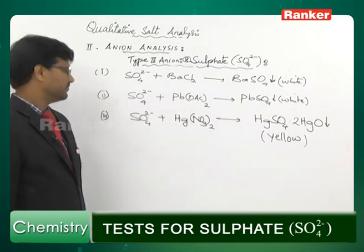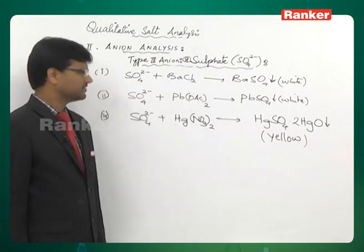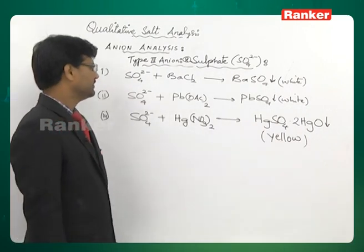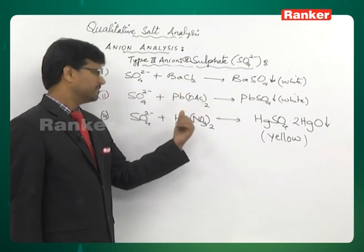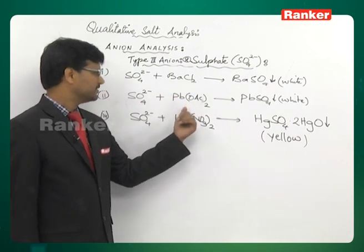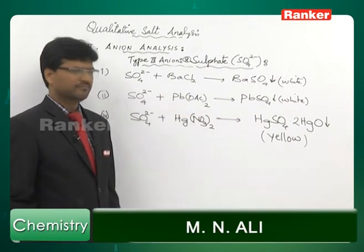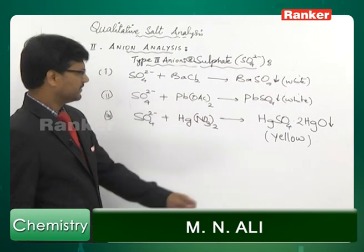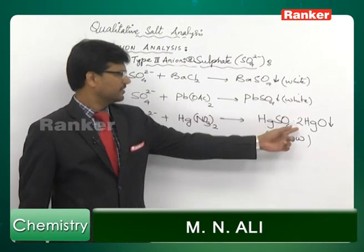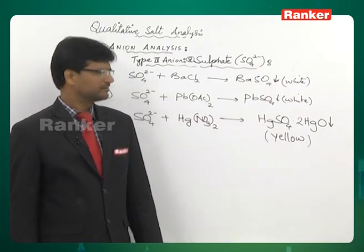So, these are some important precipitation reactions of sulphate. Sulphate can give a precipitate with barium chloride, lead acetate, and even mercuric nitrate. With mercuric nitrate, you get a basic mercuric sulphate precipitate which has a yellow colour.